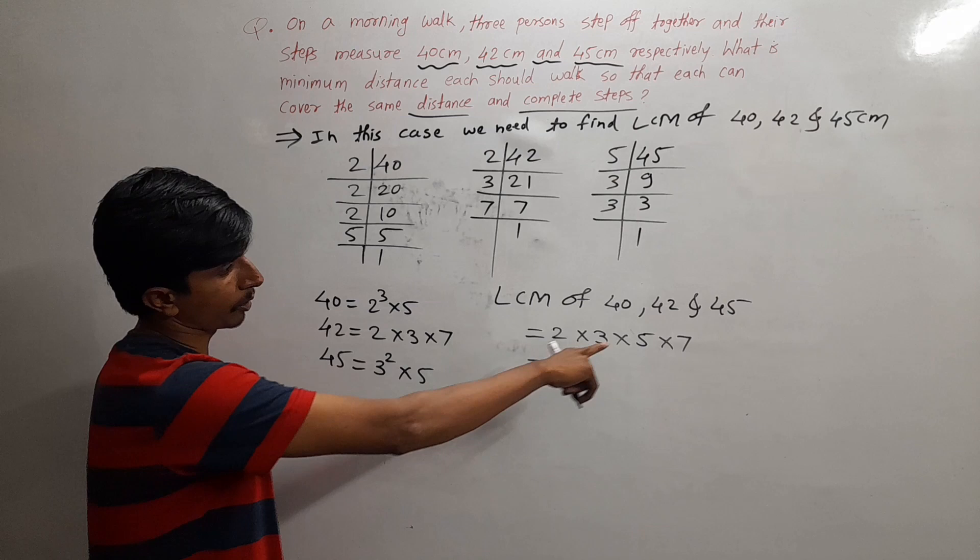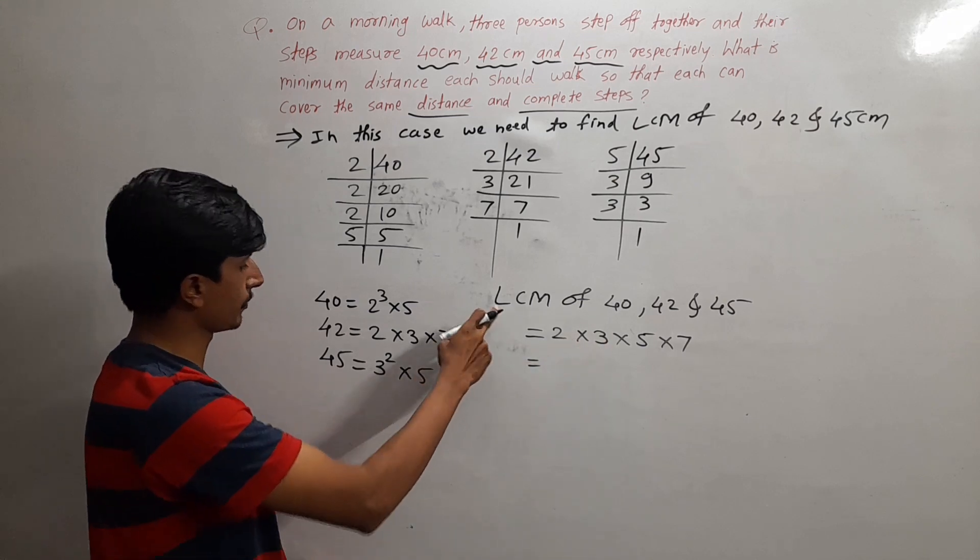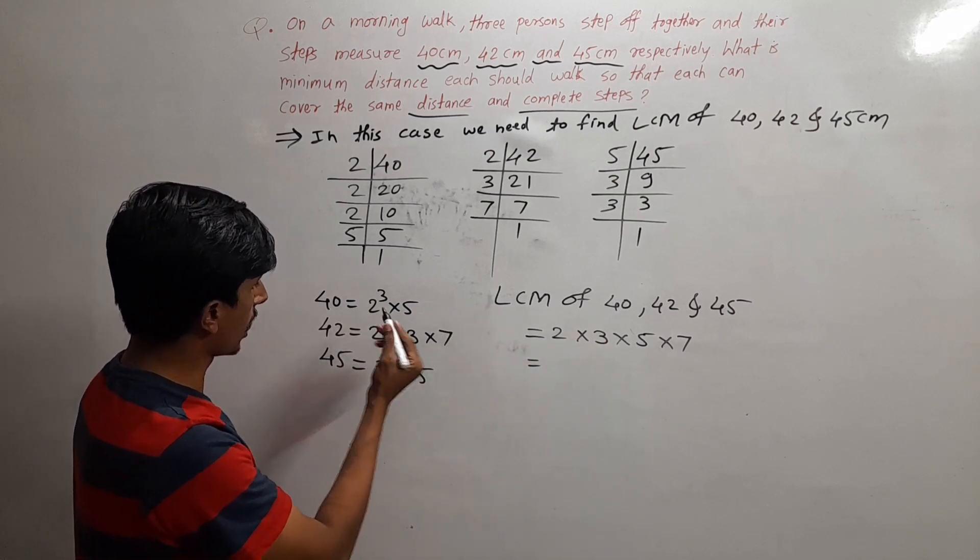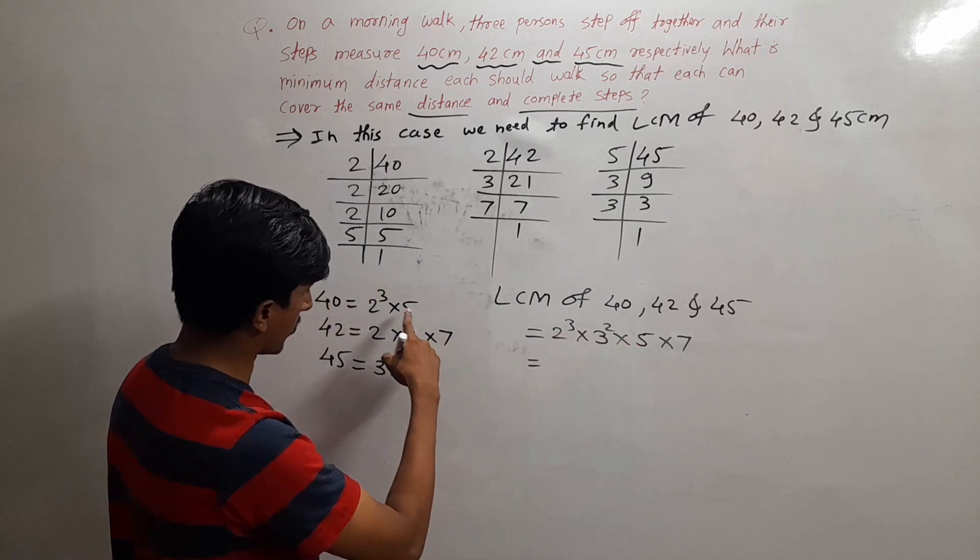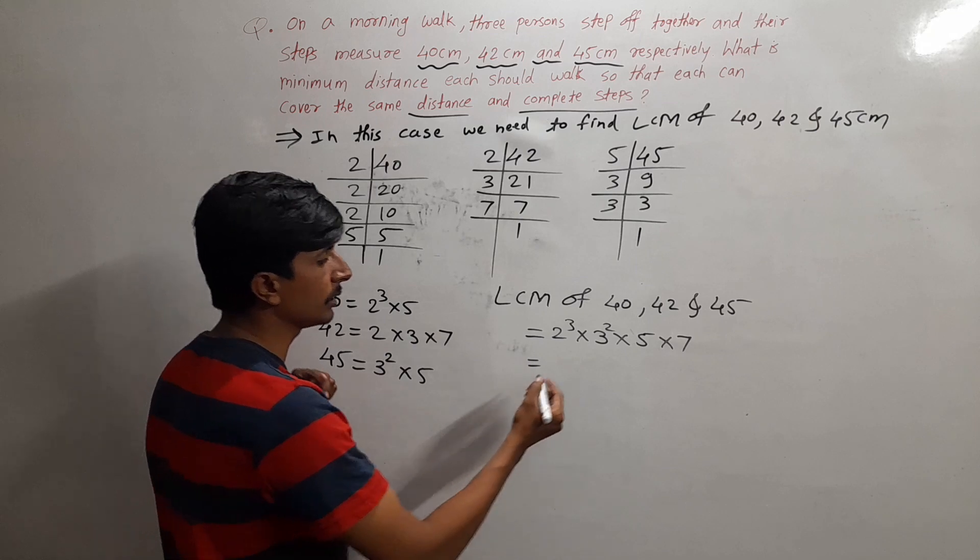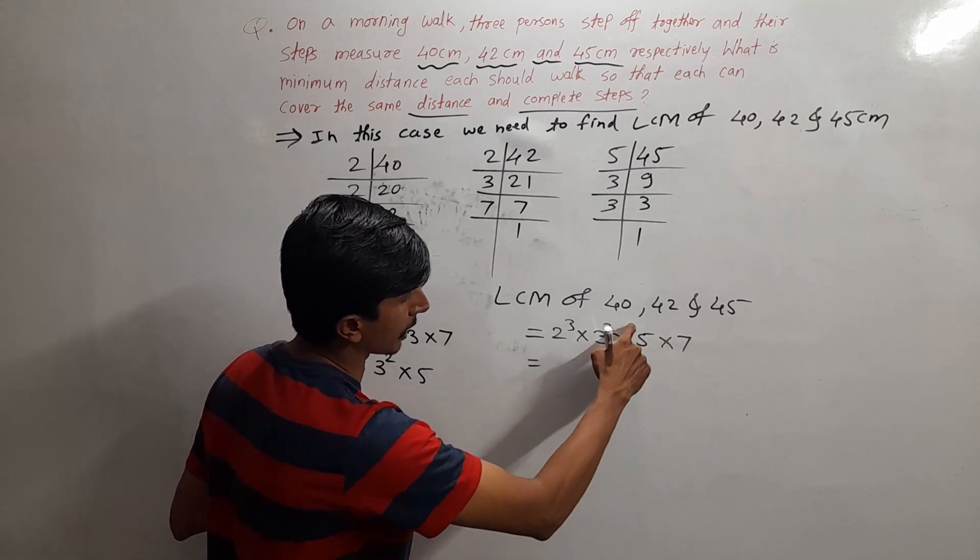For LCM we have to take the highest power of each prime. The highest power is 2³, then 3², and 5 and 7 are single powers, so we write them as is.